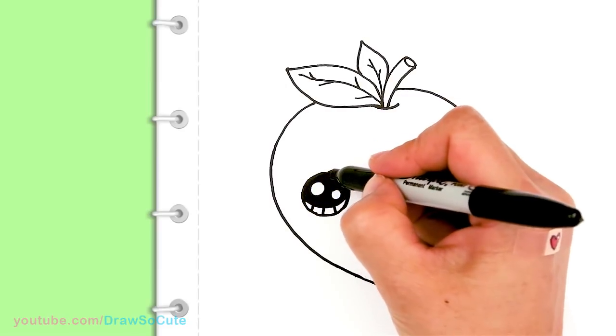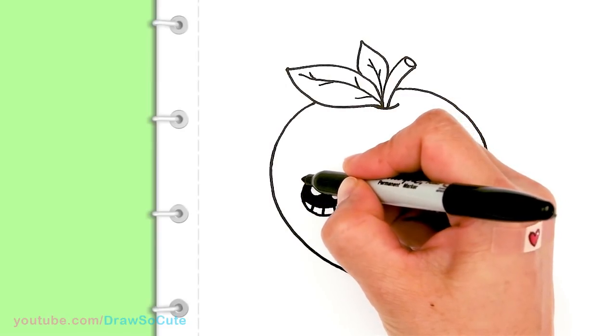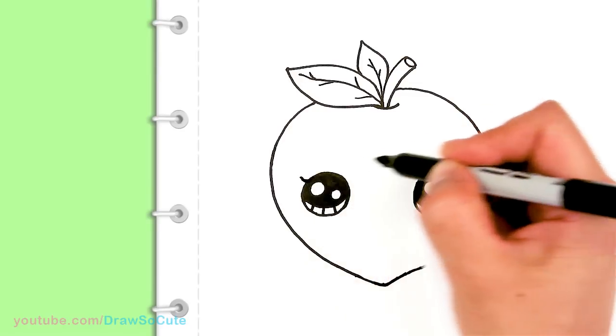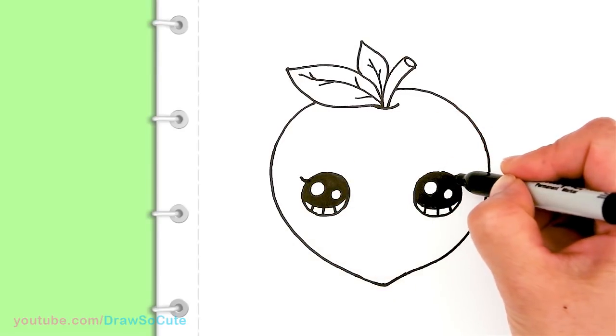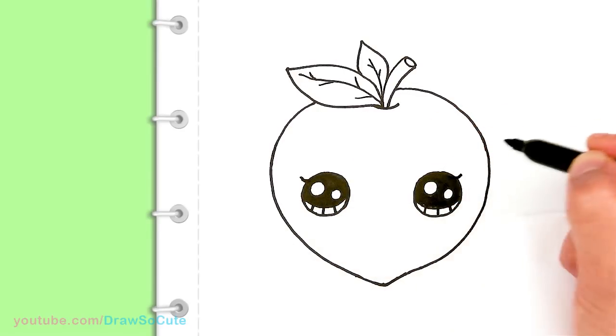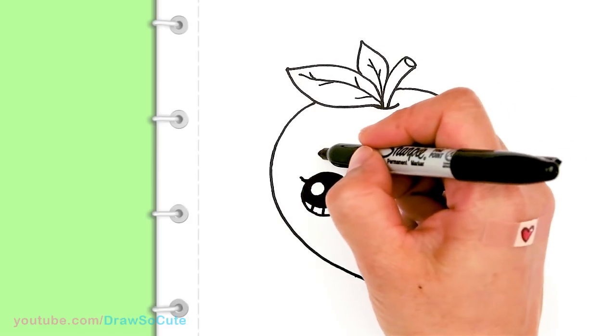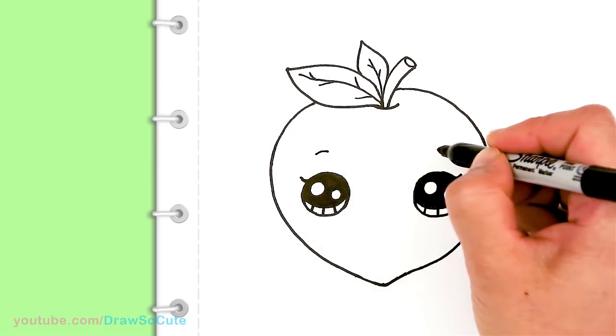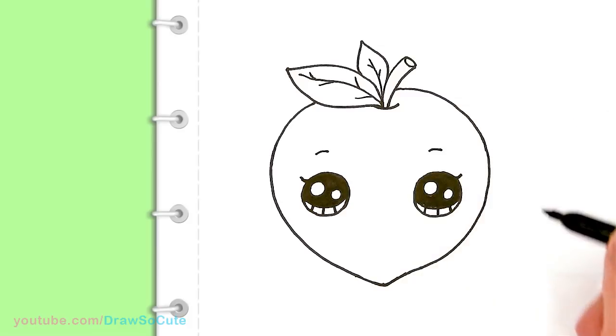So now with the eyes in, we can come up here if you want. Just add a little curve for lash. And same thing on this side. Just a small little one. And then come up here and just draw a little curve on top of each eye. Anchor our eyes.